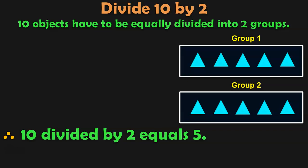In the previous example, we took each object one by one and split it among the available number of groups. But here, as it is 10 divided by 2, we are taking 2 objects at a time and splitting them among the 2 groups. Let us do more examples to revise this concept better.